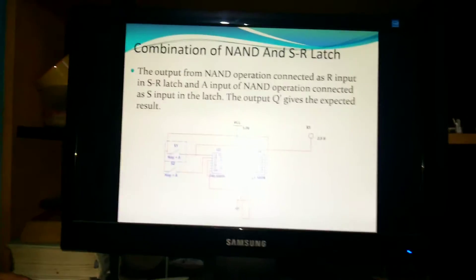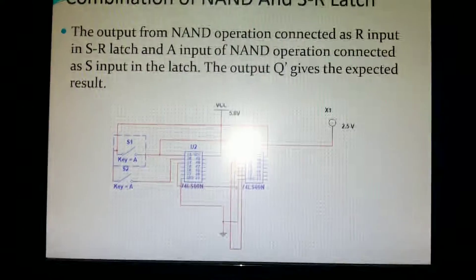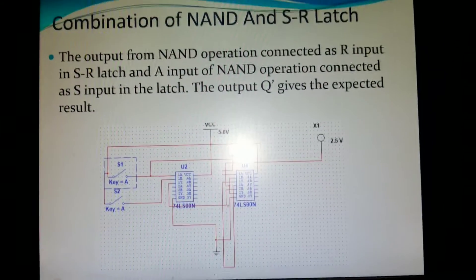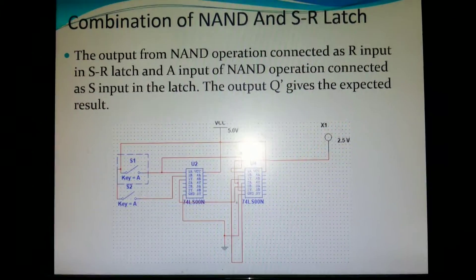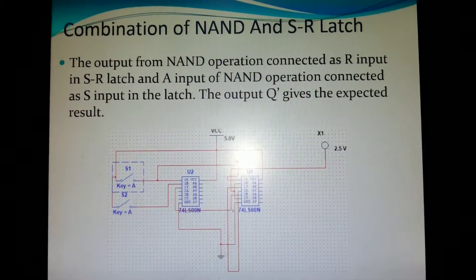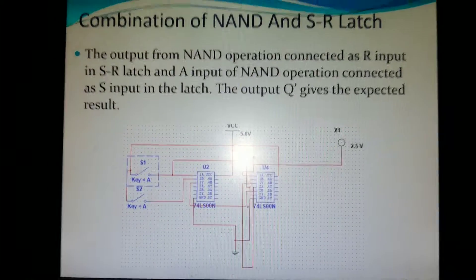Here we can see the total output from NAND operation connected as R input in SR latch, and another input of NAND operation connected as S input in the latch. The output Q gives us the expected result.